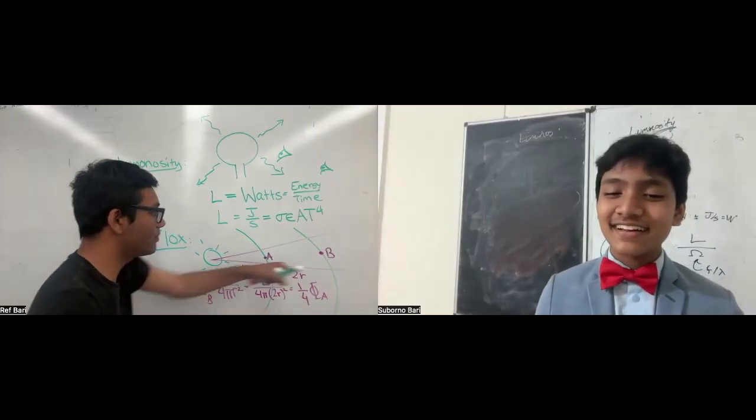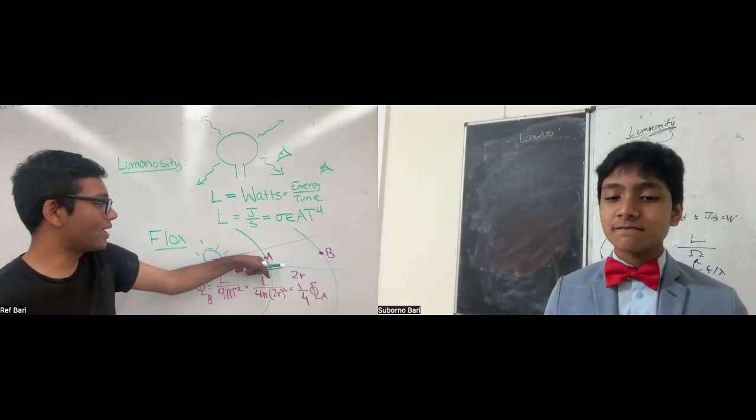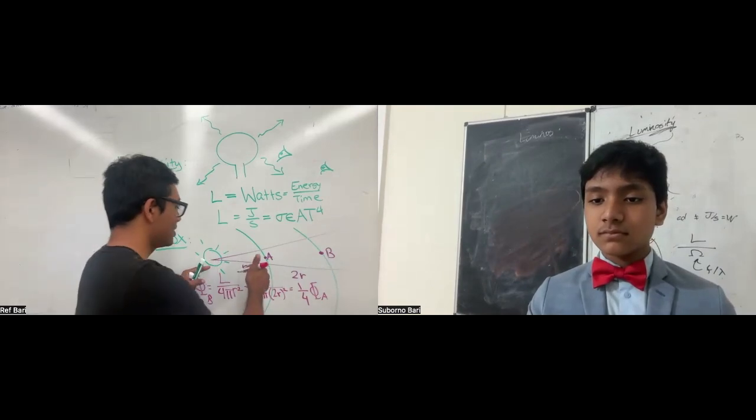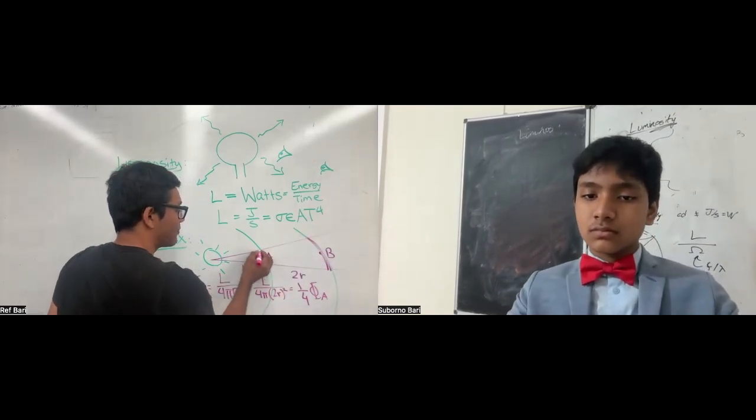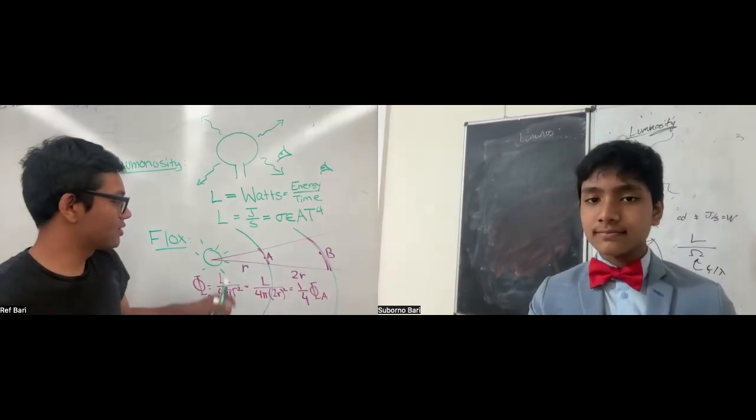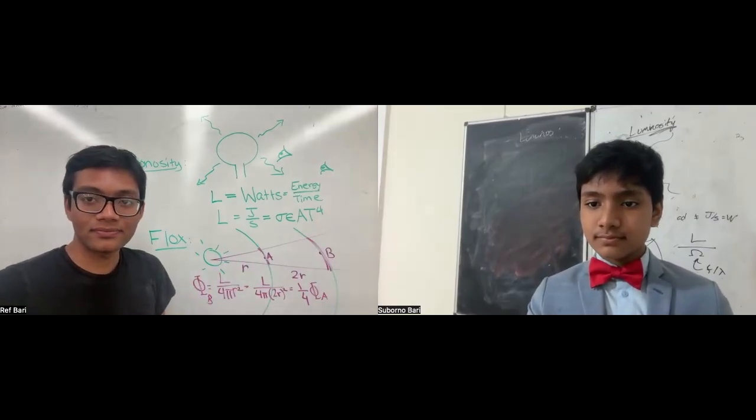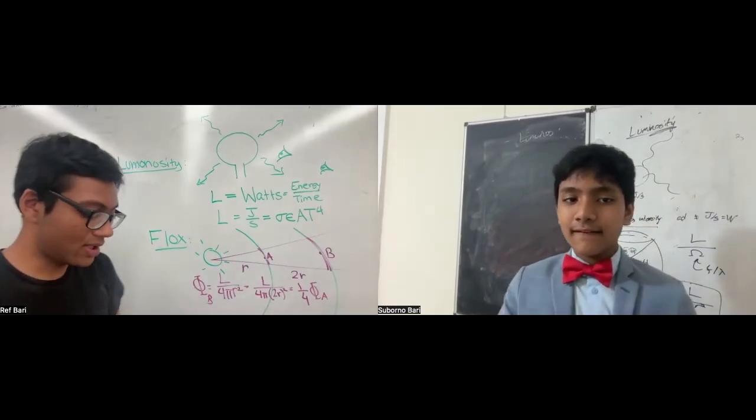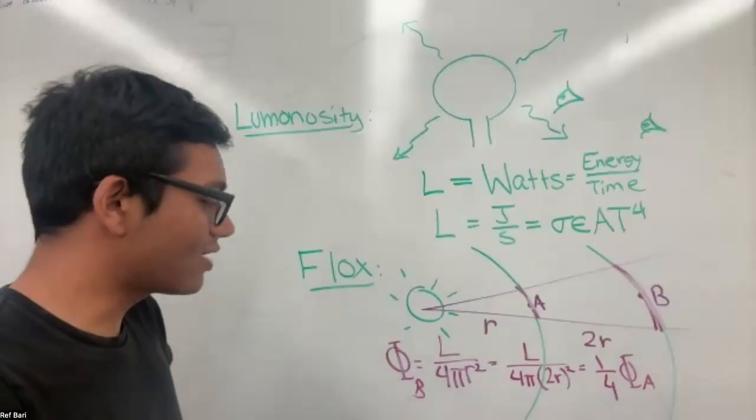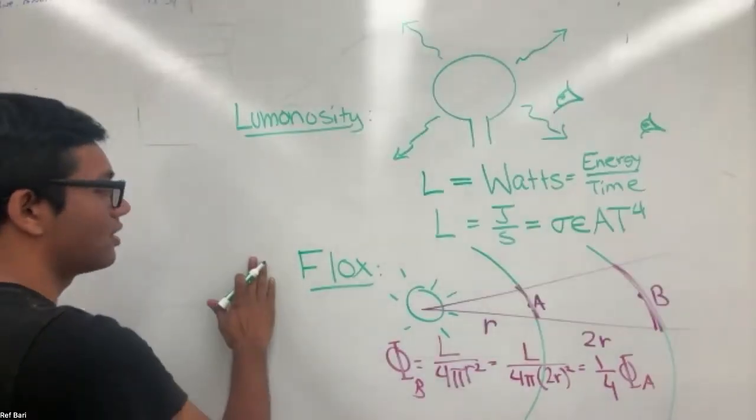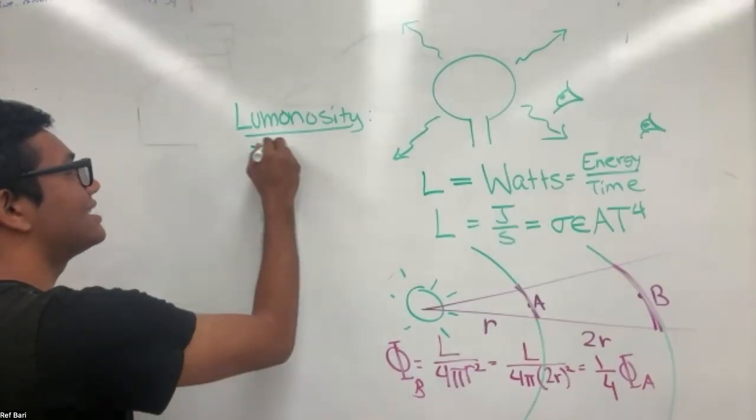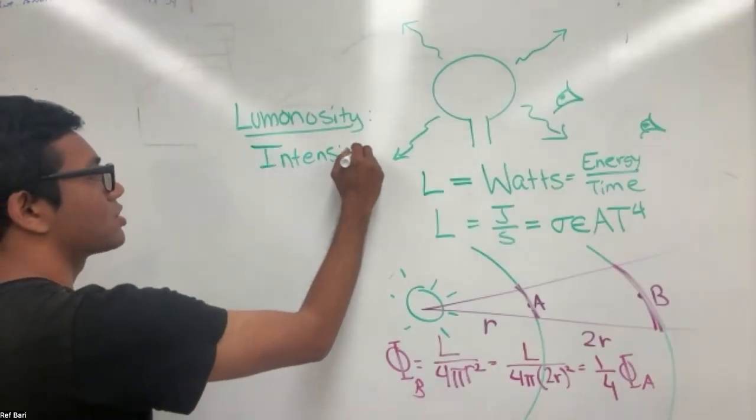So, the flux at point B will be one-fourth of the flux at point A, because light has to... See, the light is spread out over a greater surface area at point B than at point A. So, that's the idea behind flux. The final concept is luminous intensity. So, luminous intensity, the idea is simple.